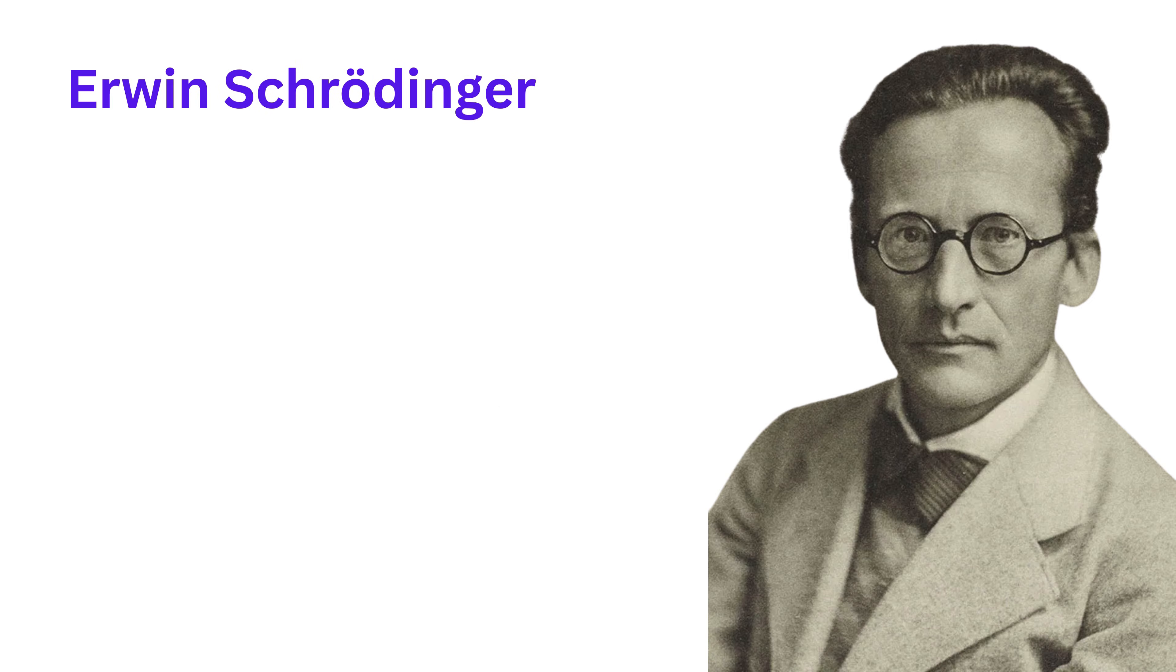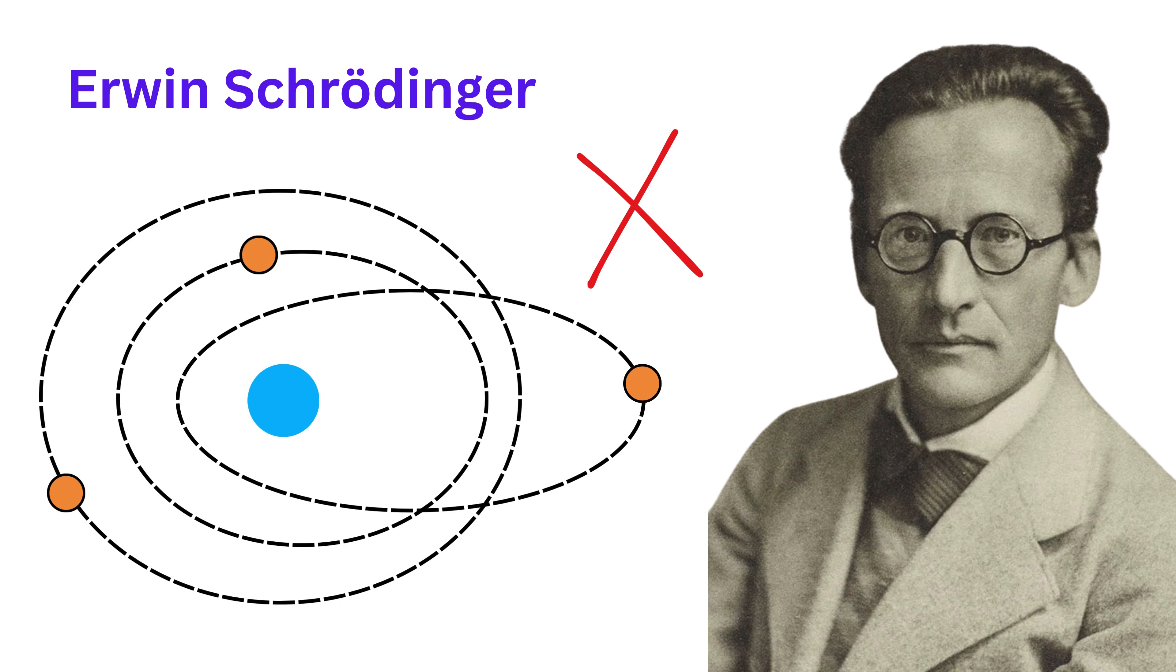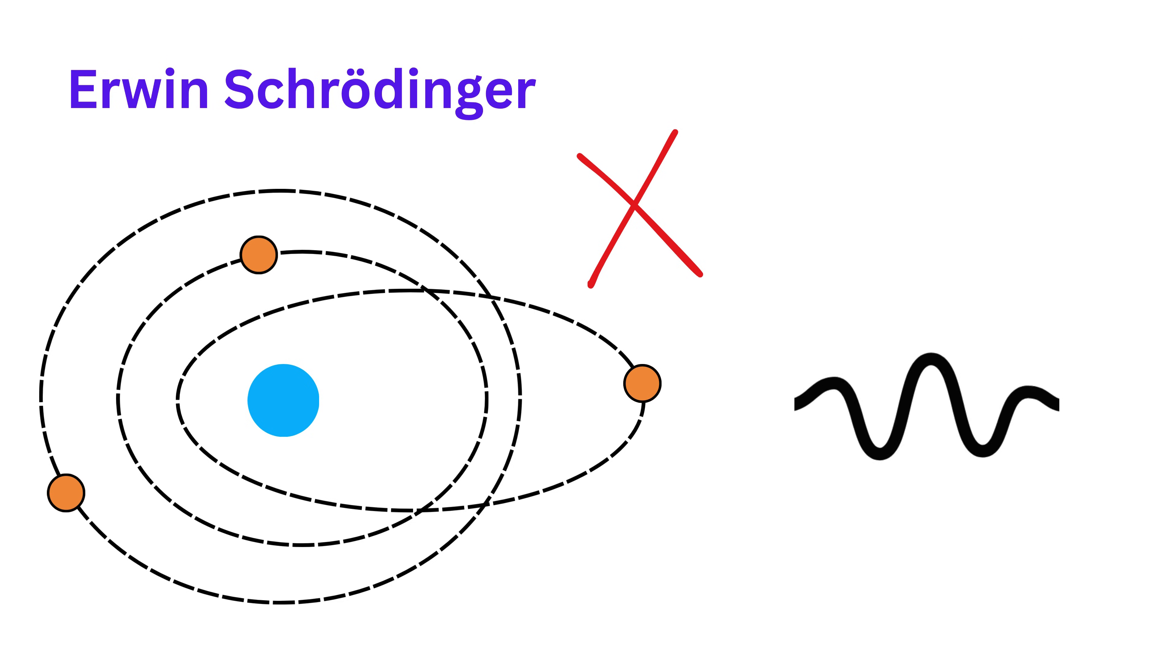Then came Erwin Schrödinger, who changed the way we think about electrons completely. He said we shouldn't think of electrons as little balls spinning in circles. Instead, we should think of them as waves.